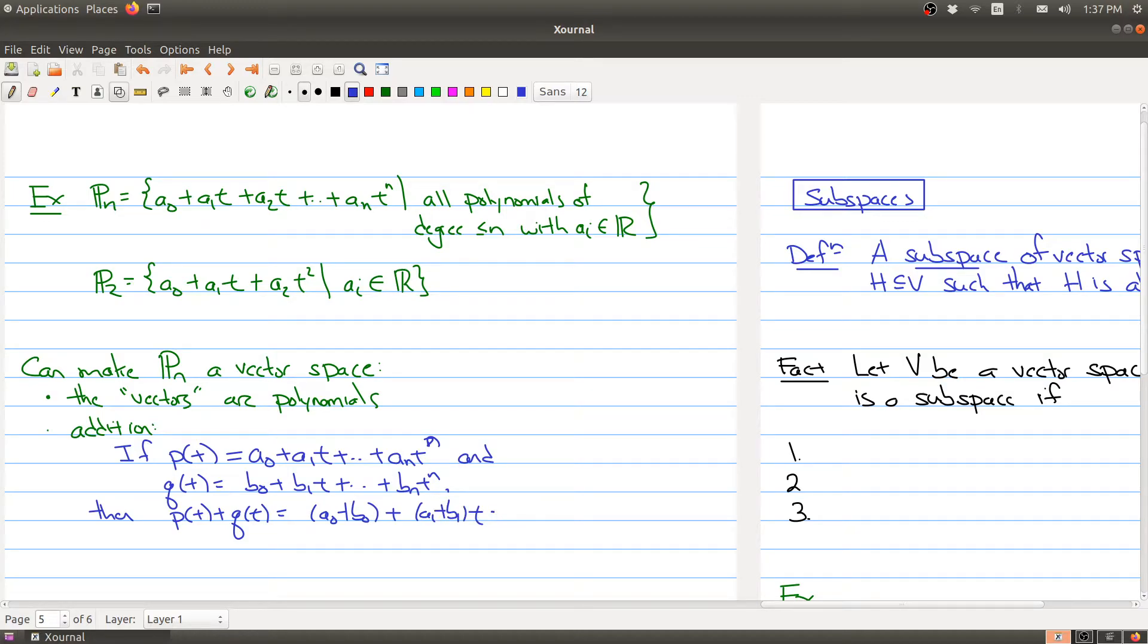And you group terms by which power of t or group the coefficients by their powers. And that would be the sum of two polynomials.